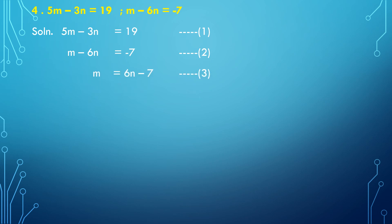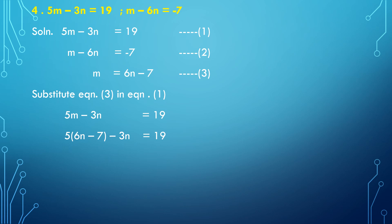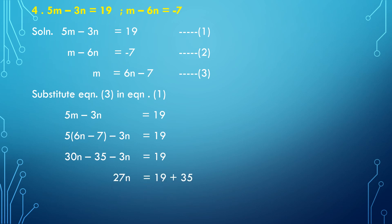We can rewrite equation number 2 as m equal to 6n minus 7 — taking minus 6n to the right side, it becomes plus 6n. This is equation number 3. Now substitute equation number 3 into equation number 1: 5m minus 3n equal to 19 becomes 5 times (6n minus 7) minus 3n equal to 19. Expanding: 30n minus 35 minus 3n equal to 19.